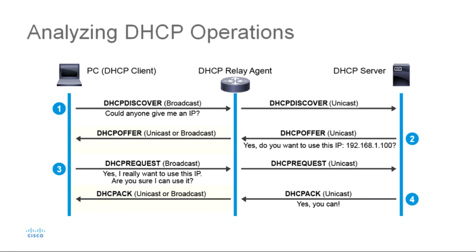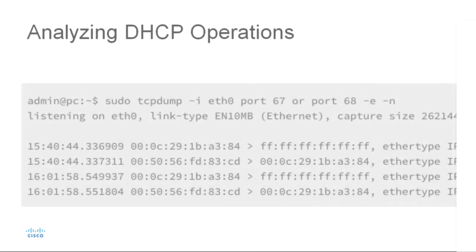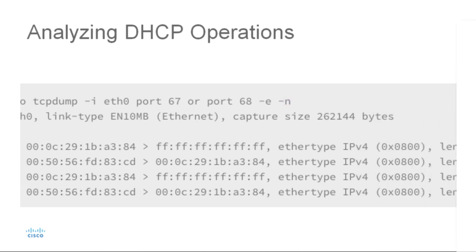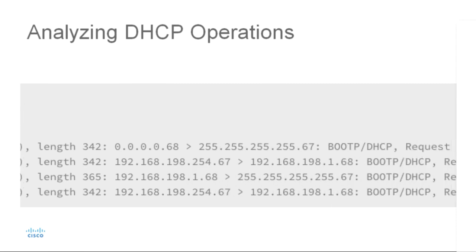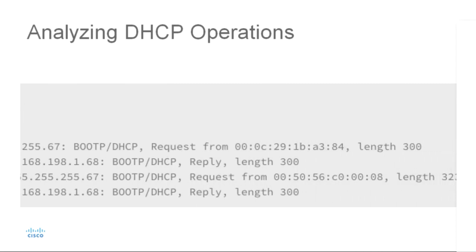Now that you understand how DHCP works, you may find it necessary to analyze DHCP packets when monitoring or troubleshooting DHCP issues. This first example shows the output from the TCPdump command on a Linux machine. We're listening to ETH0, specified using the dash-I option. Both UDP ports 67 and 68 are included in the filter. The dash-E option is used to display the source and destination MAC address, and the dash-N option displays addresses instead of names. From this output, you can observe the DHCP requests and reply messages between the devices, with the last line showing the MAC address being associated with an IP address.